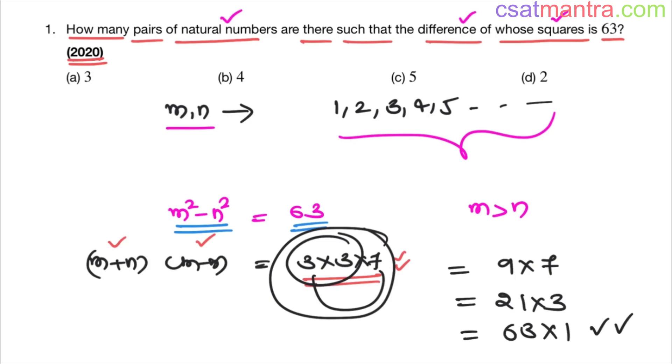This most of you would be missing. See, 63 you can write it as 63 into 1, right? Any number you take, you can write it as n into 1. So this possibility you should not be missing.